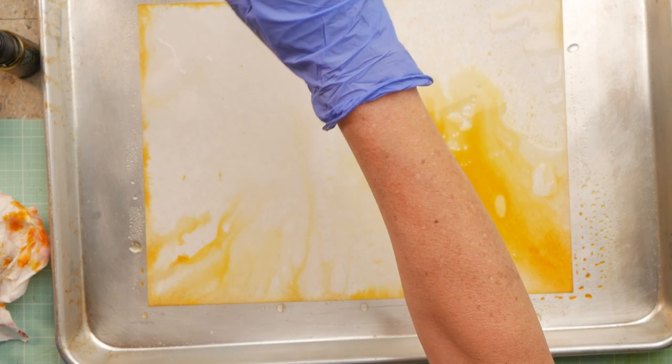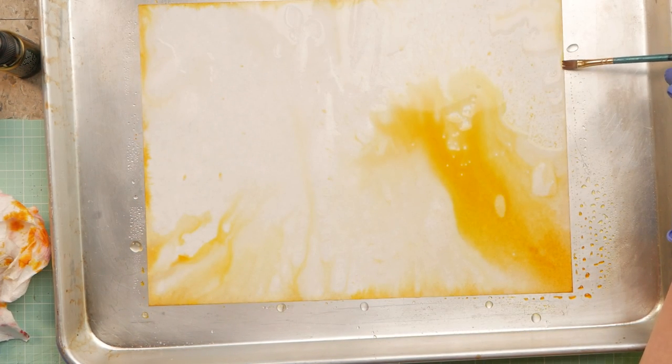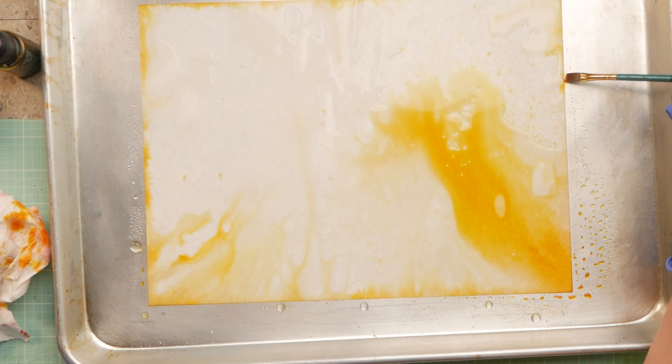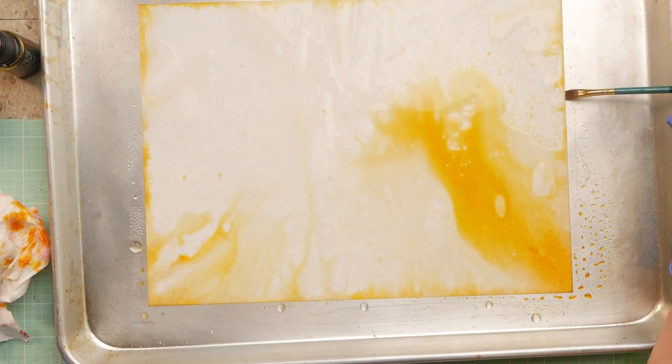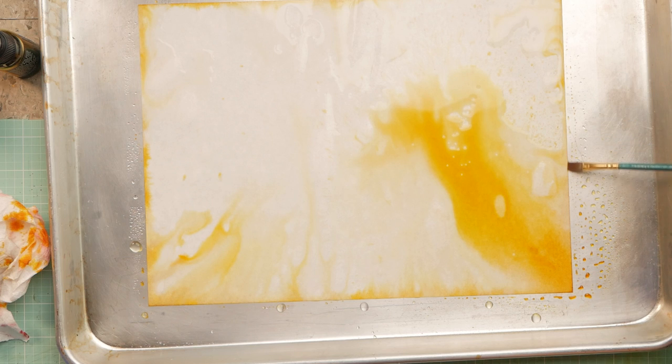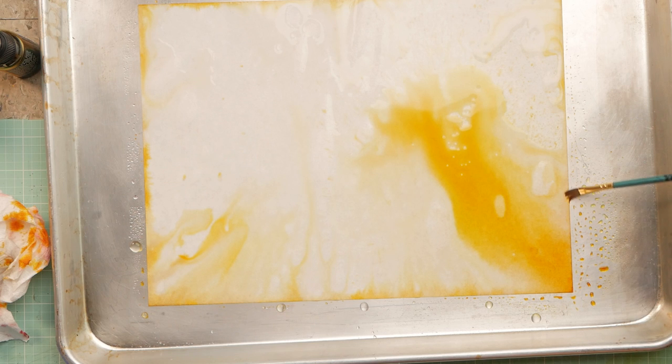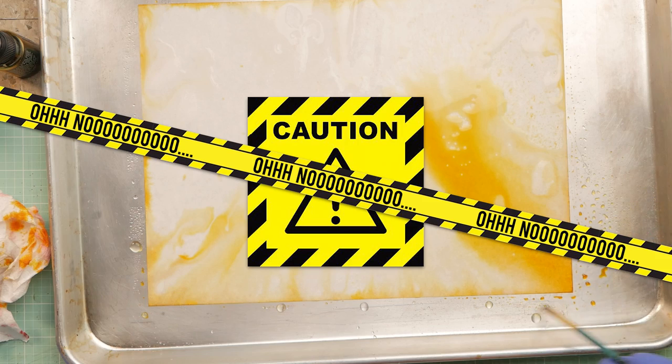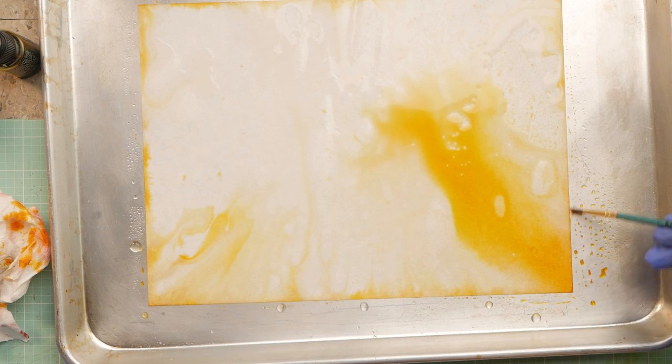Yellow is one of those colors that can really get away from you really quickly. Anybody ever painted a room yellow and you thought when you were picking out the color, oh, this is such a great, buttery, beautiful color. It's going to look just homey and cozy and great. You get it home and you paint a wall and oh my God, it looks like a caution sign.